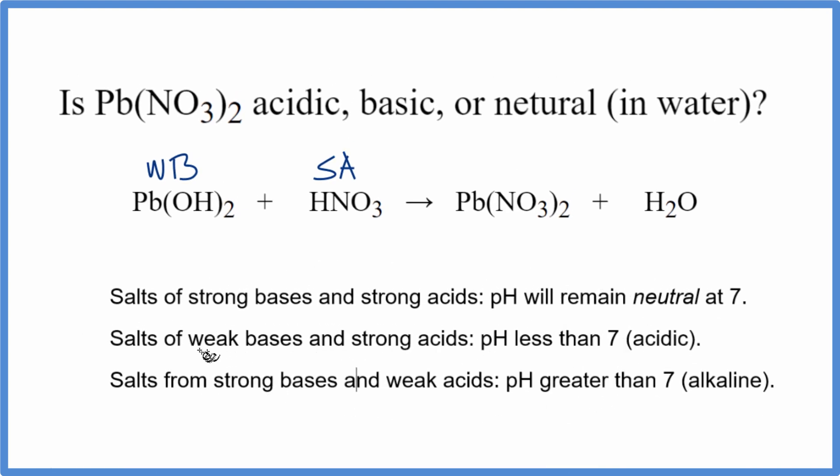According to our rules, if we have a weak base, like our Pb(OH)2, and the strong acid, our HNO3, the resulting solution will have a pH less than 7. That means it's gonna be acidic.